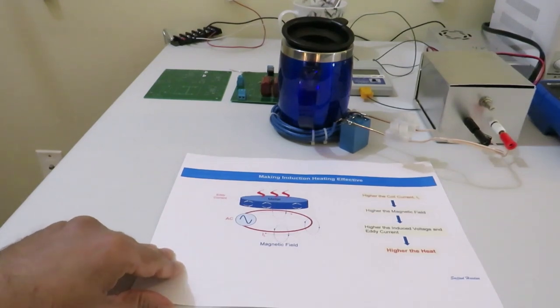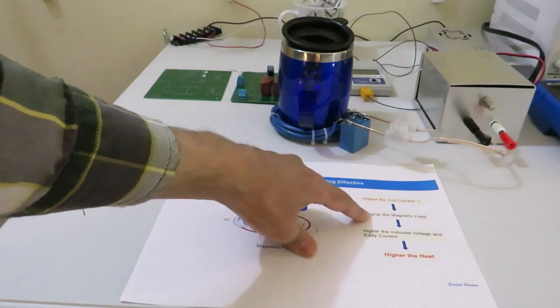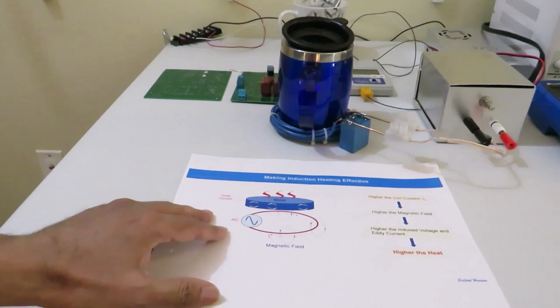To get effective induction heating, all we need is very high current through the loop. As a result, higher magnetic field will be generated, higher eddy current and higher heat.